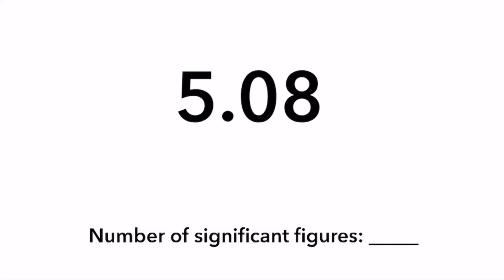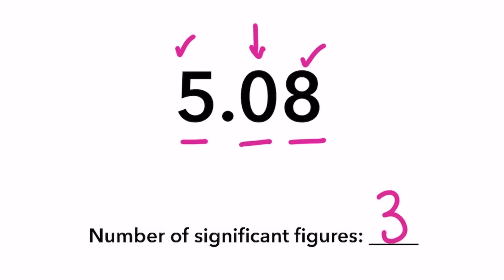Example one: 5.08. The five and eight are non-zero numbers. And this zero is between two non-zero numbers, so it is also significant. So our final answer is that this has three significant figures.